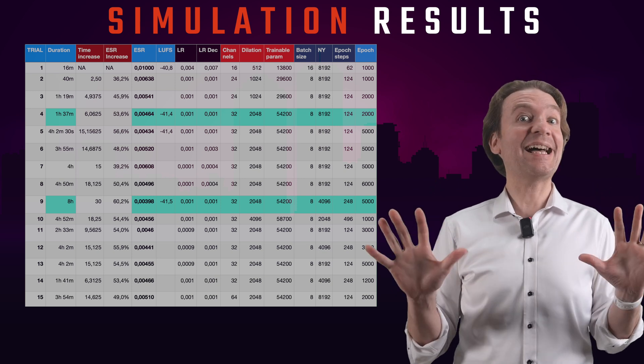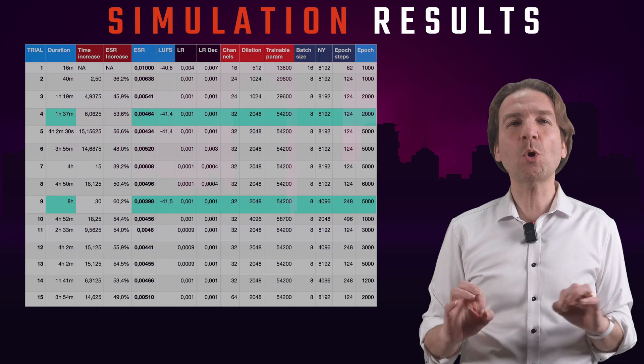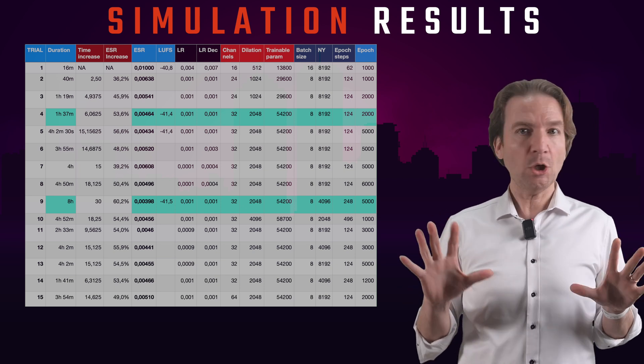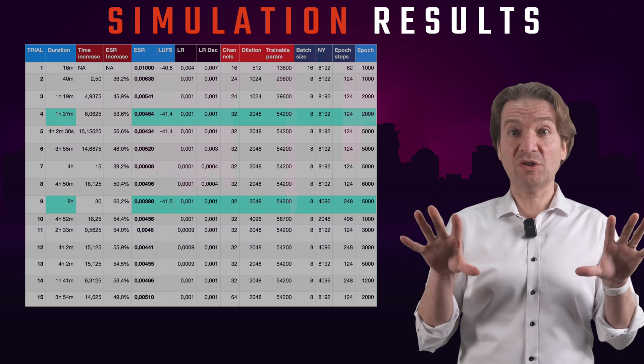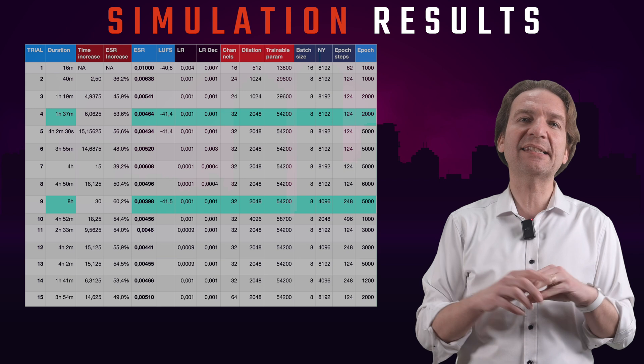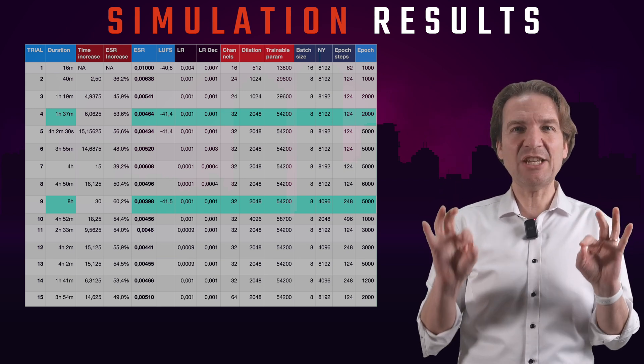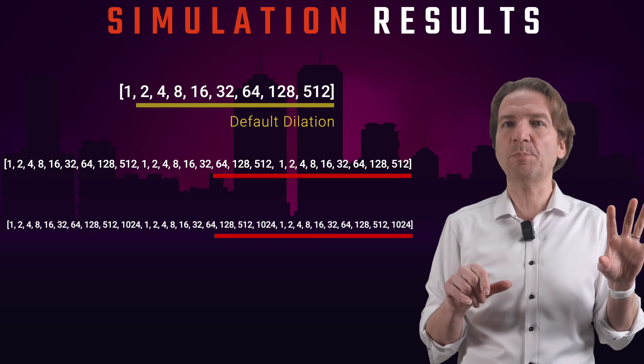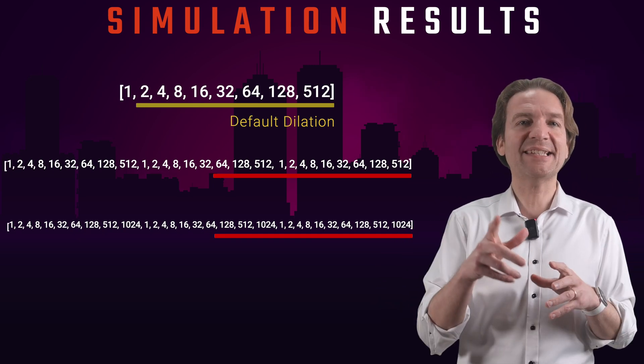And now my last test. I want to set up a much more complex neural net with a lot of trainable parameters. And for this purpose, I would use some suggestions I read in some blogs and articles. Basically using a dilation like the one shown in the picture and with the same parameters of my trial number 4. Let's check out the results.